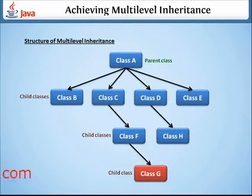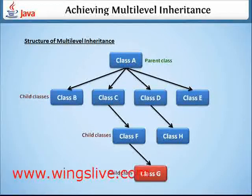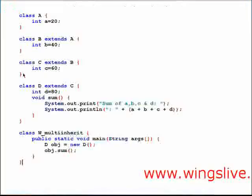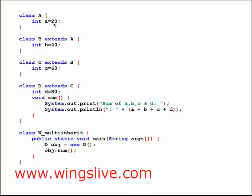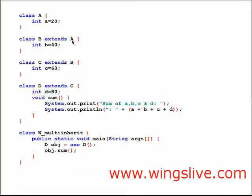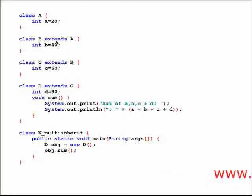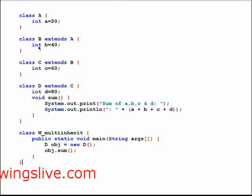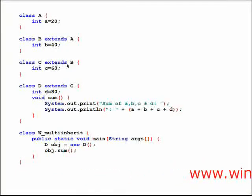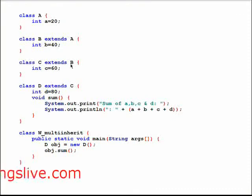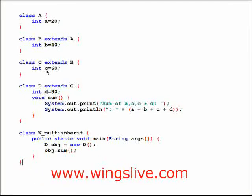For a better understanding, let's work on an example. Here in this program, class A initializes integer variable A as 20. Next, class B inherits class A using the keyword extends, so it contains the property of class A and initializes integer variable B as 40. Next, class C inherits class B, so it automatically gets the property of class A also. It initializes integer variable C as 60.